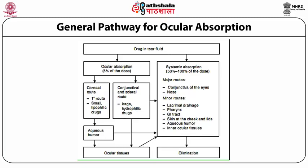Regarding systemic absorption, the major routes traversed include the conjunctiva of the eye and the nasal mucosa, while minor routes comprise lacrimal drainage, pharynx, GI tract, skin at the cheek and lids, aqueous humor, and inner ocular tissues. All drugs traversing these routes are finally submitted for elimination.